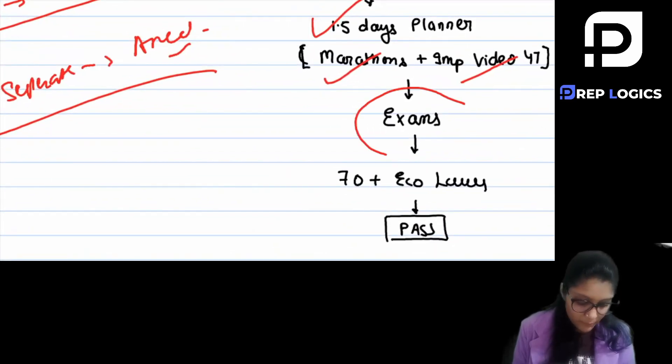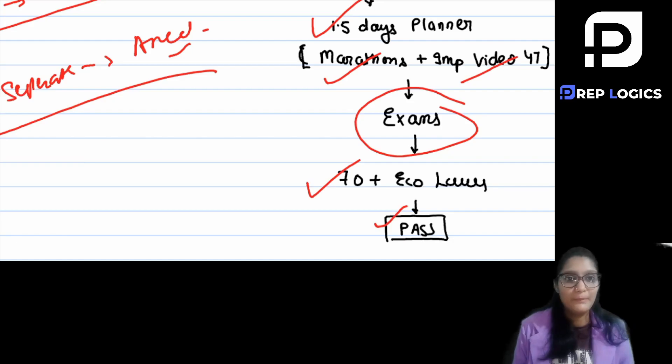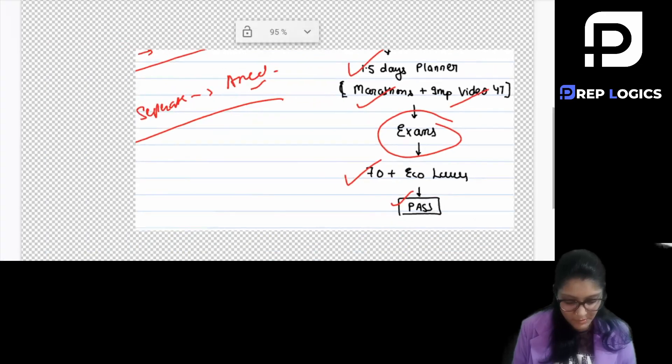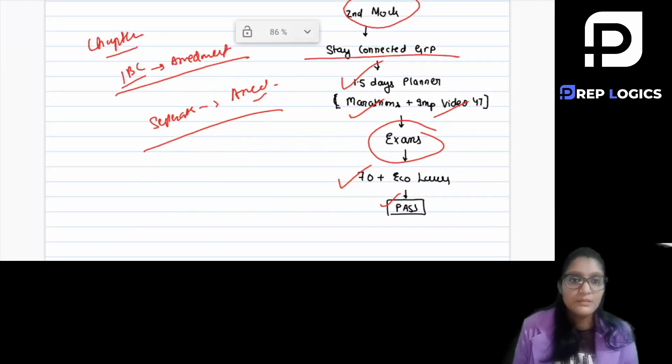After that I will give you your exams and in exams I expect you will give 70 plus marks. And not only this, if you are able to score 70 plus marks or 80 plus marks in the Economic Laws, then mostly people will pass in your second group if you are able to score this much marks into your exam.